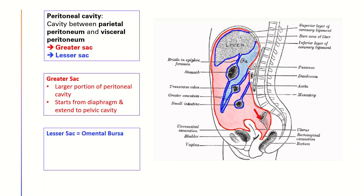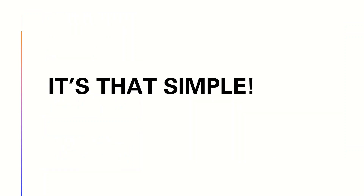The lesser sac, shaded in blue, is also called the omental bursa. It is the smaller portion of the peritoneal cavity and lies posterior to the liver and stomach. Done, it's that simple.